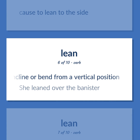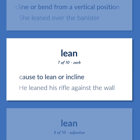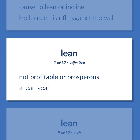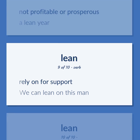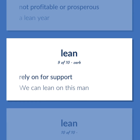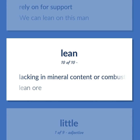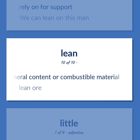Lean. Definition: Cause to lean or incline. Example: He leaned his rifle against the wall. Definition: Not profitable or prosperous. Example: A lean year. Definition: Rely on for support. Example: We can lean on this man. Definition: Lacking in mineral content or combustible material. Example: Lean ore.